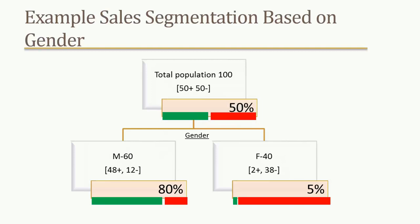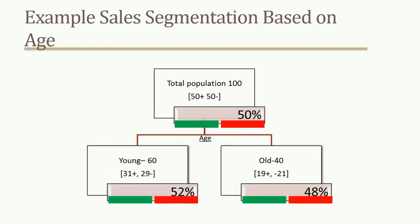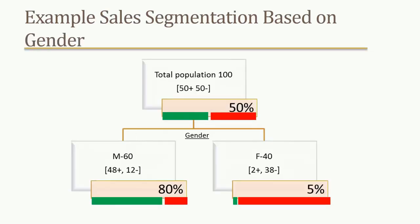In contrast, the gender variable shows much better results. At the root level it's again 50/50, but at the individual splits, the male population has an 80% chance of buying and the female population has just 5% chance — meaning 95% chance of not buying. So the male segment is pure from the point of view of buying, and the female segment is pure from the point of view of not buying. This split is much better than the age-based split.